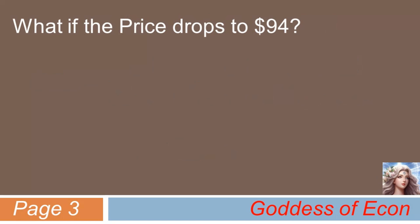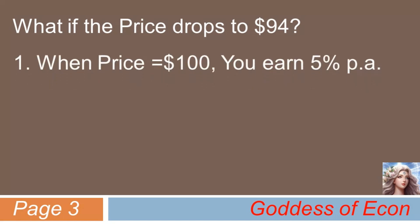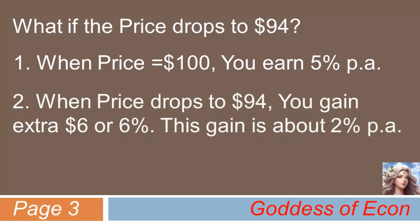Now, what if the bond's price drops to $94? Well, even without a financial calculator or Excel program, there is a way to roughly estimate the yield to maturity in your head. It can indeed be done by undergoing the following thought process. First, we know that when price is at $100, par, you will earn 5% per annum by investing in this bond. But then, if the price becomes $94 instead of $100, you gain an extra $6, or 6% return, as you can buy the bond at this cheaper price. In annual terms, the gain of 6% translates to about 2% per annum. Therefore, the new YTM of the bond should be roughly 7%, which is about 2% higher than before.